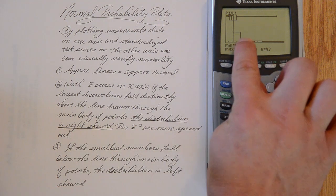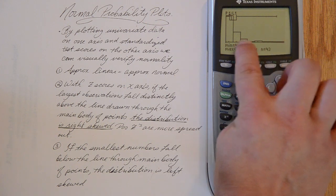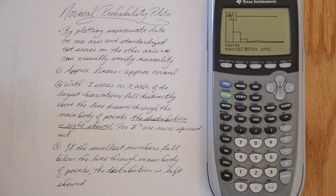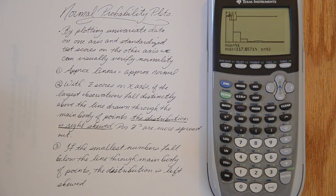Your mean might be somewhere over here and all these values with positive z-scores are going to be obviously much more spread out than the negative z-scores. If the smallest numbers fall below the line that you can visualize through the main body of points, then the distribution is left skewed. Let's see how that looks.